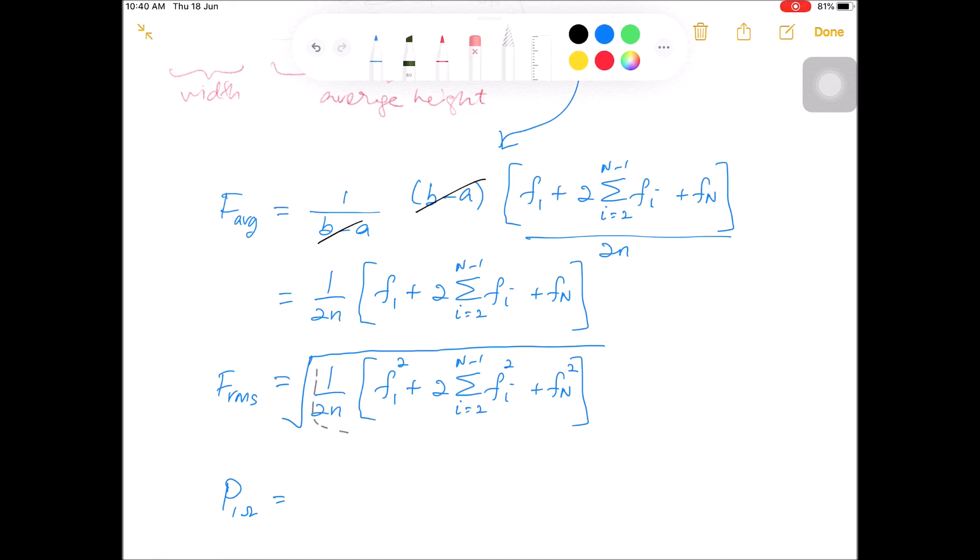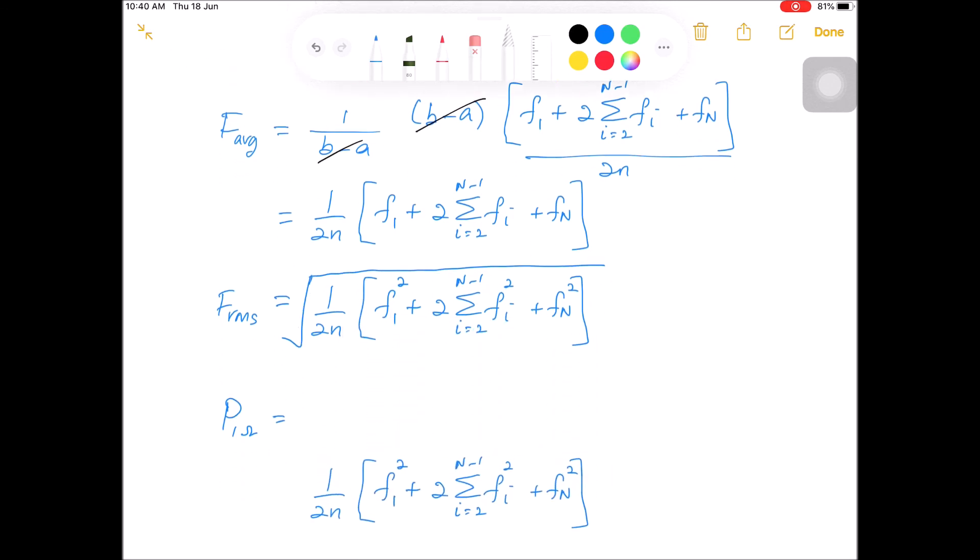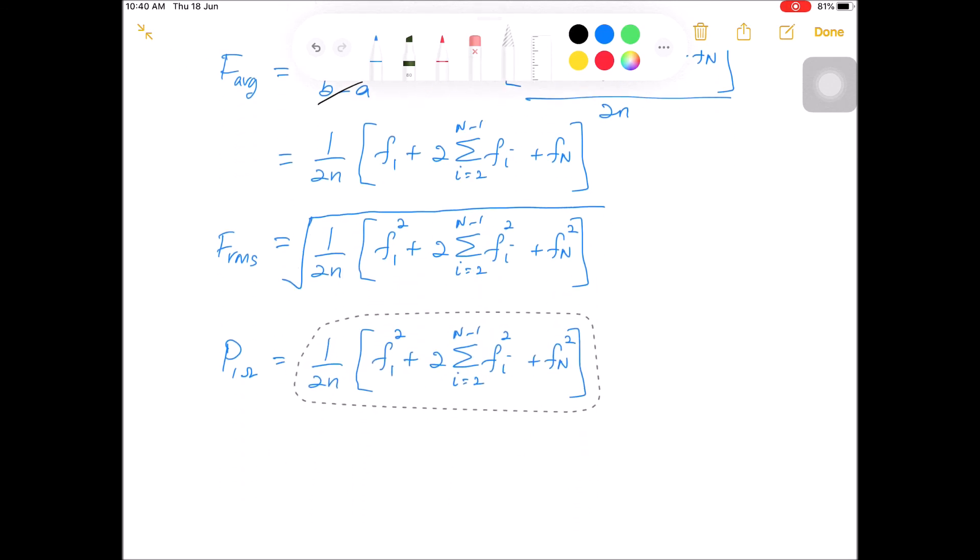And also the normalized power is this term equals to this term. You know RMS power without having the square root is in fact the normalized power. So these are the formulas for the average value, RMS value, and the normalized power based on the trapezoidal rule formula.